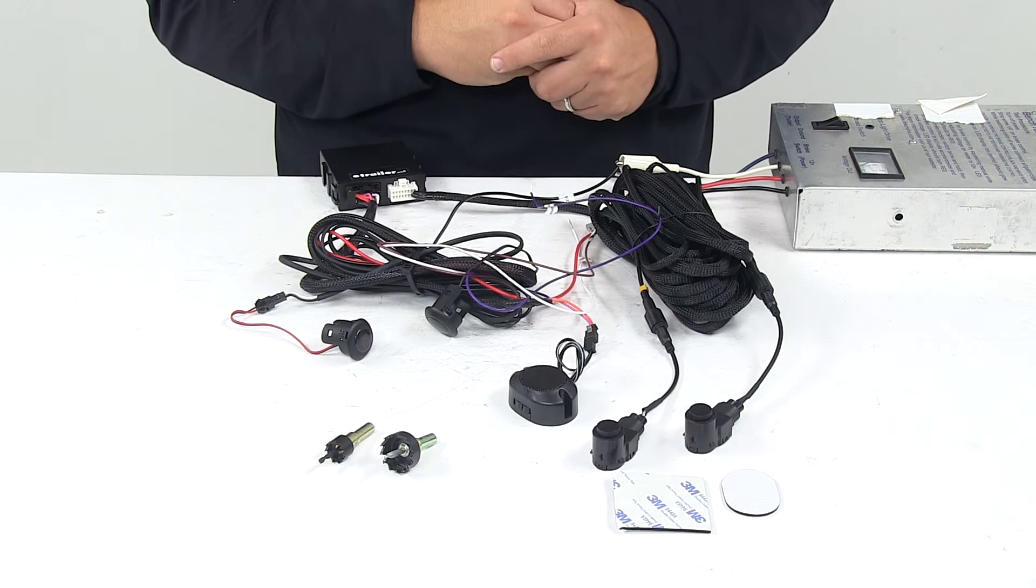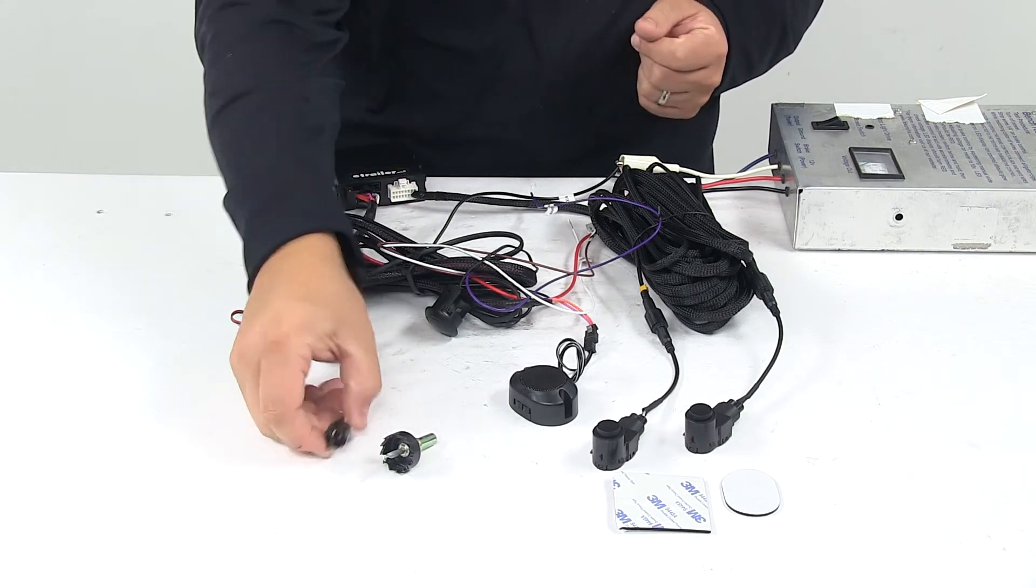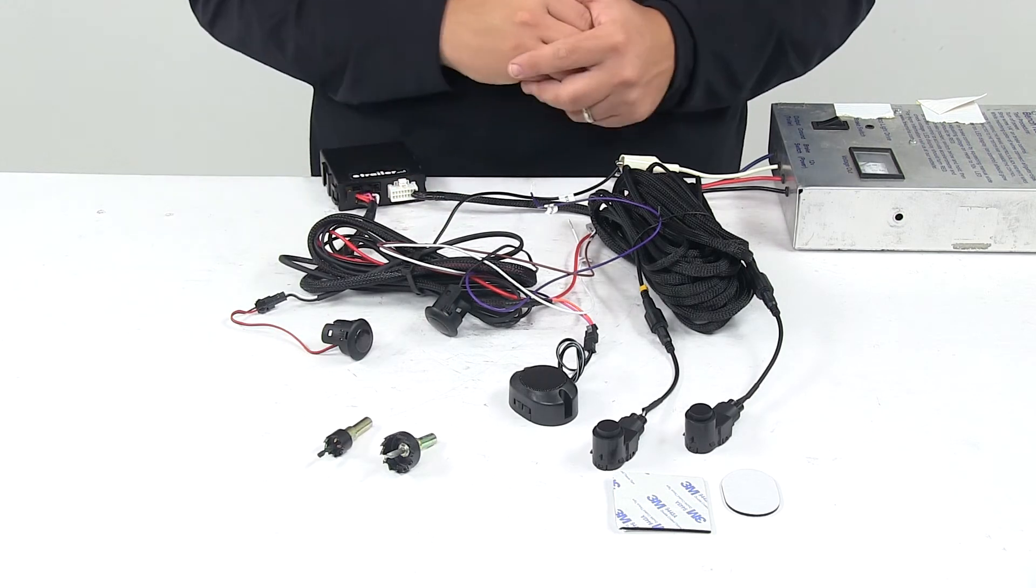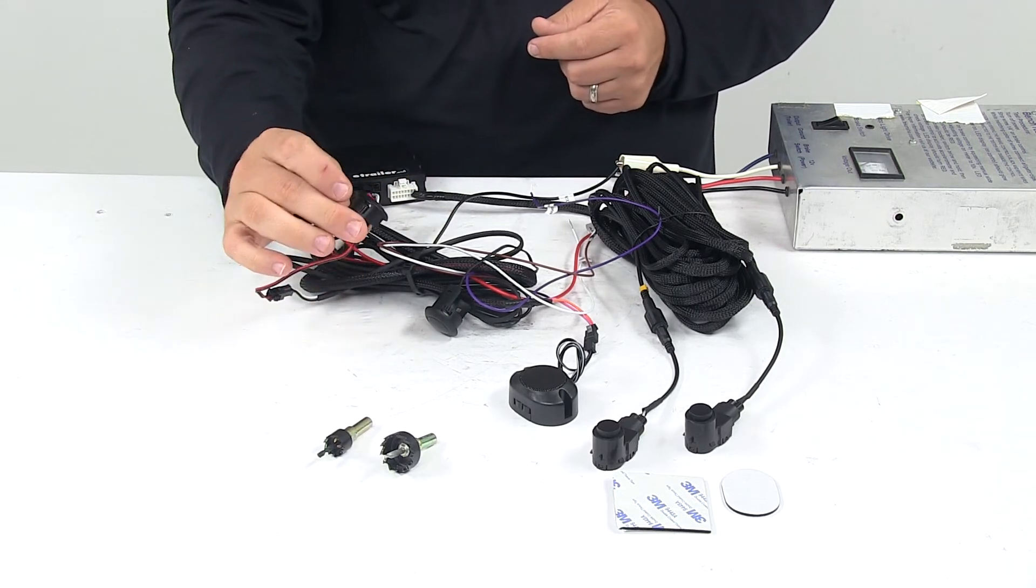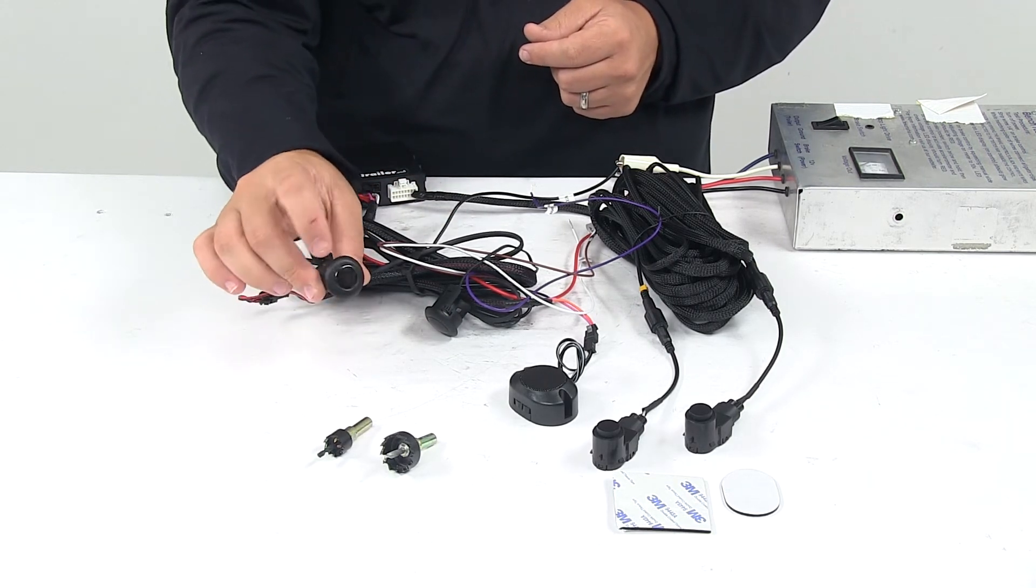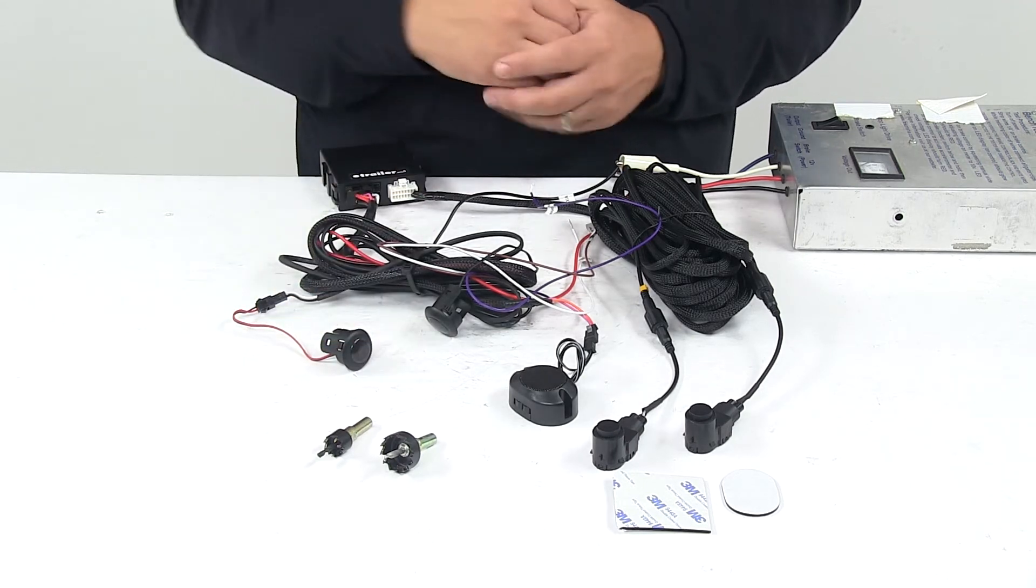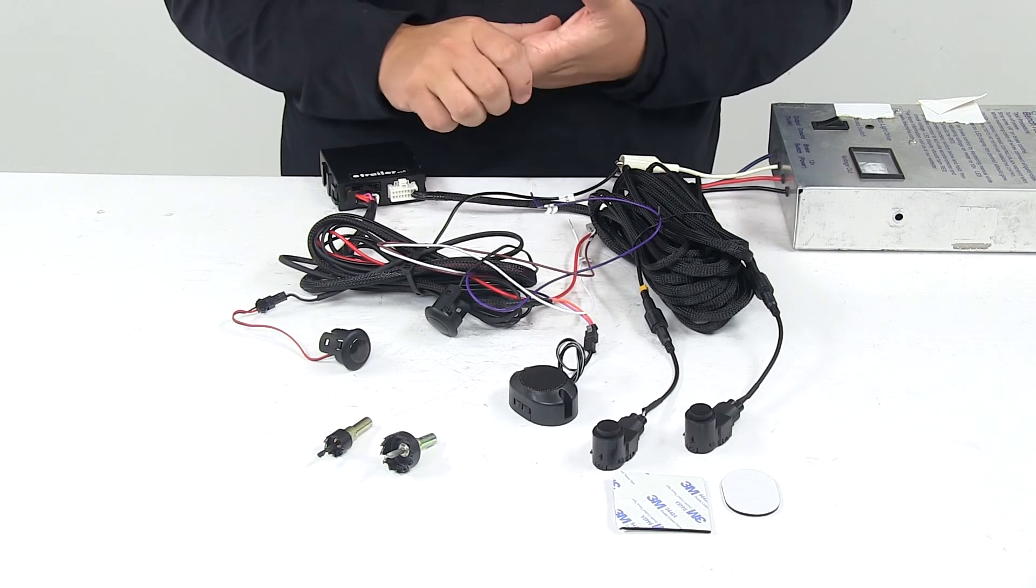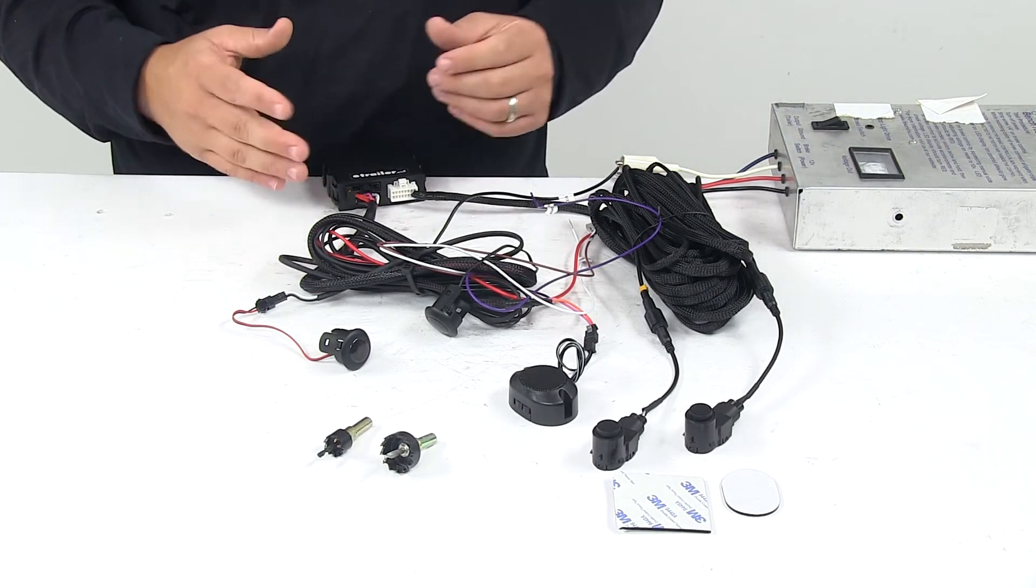It comes with the necessary tools for creating the holes that the sensors and the visual alert units mount in. It comes with two different little hole saws, comes with your adhesive backing, comes with detailed installation instructions, comes with everything you need for your application.